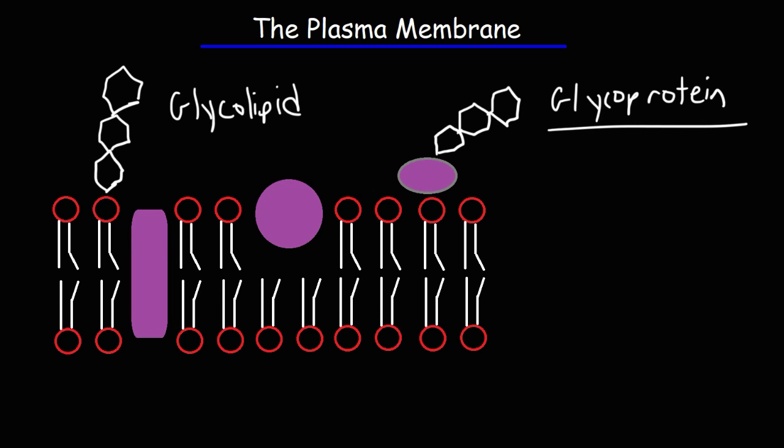Now, on the cell membrane, cholesterol can also be found in it. Cholesterol has a hydroxyl group represented in blue and it has four fused rings. So that's a typical representation of cholesterol.